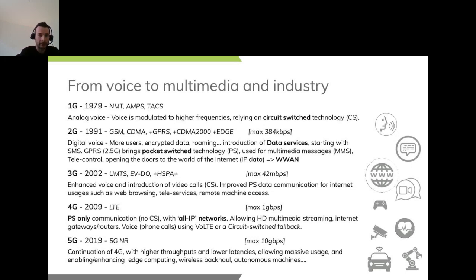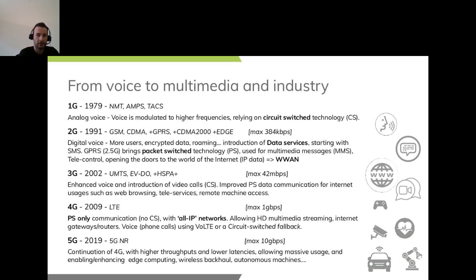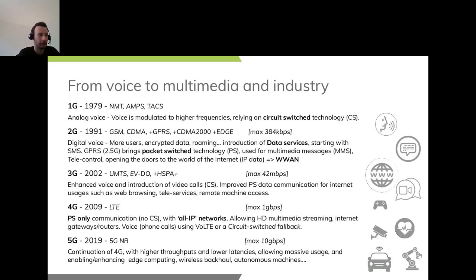Some time after that, GPRS was introduced, also known as 2.5G, and it introduced packet switch technology in order to transport non-voice data, such as multimedia messages and telecontrol, clearly opening the door for the Internet and IP data networks. Contrary to circuit switch technology, packets do not allocate a dedicated path, but each packet is self-descriptive and allows routing by the cellular infrastructure — basically using source address and destination address. That allows more flexibility and more parallel users.